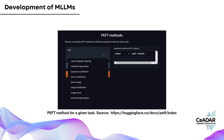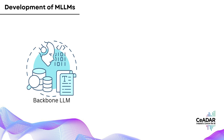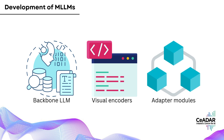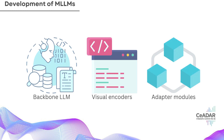Now every MLLM generally has three main parts. First, a backbone LLM, which acts as the interface for user interactions. Second, visual encoders, which are responsible for processing images. And finally, adapter modules that help translate visual information into language the LLM can understand.